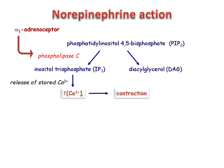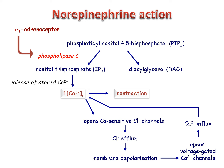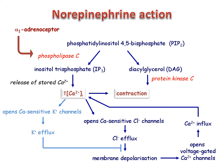Calcium can also activate chloride channels, resulting in the efflux of chloride ions and membrane depolarisation. The depolarisation in turn opens voltage-gated calcium channels to mediate calcium influx and further stimulate contraction. In parallel, the diacylglycerol generated by phospholipase C activates protein kinase C, which inhibits myosin phosphatase to promote contraction. The rise in calcium can also enhance the activity of calcium-activated potassium channels, which limits contraction. The overall level of tension generated by the smooth muscle depends on the free level of calcium ions in the cell.